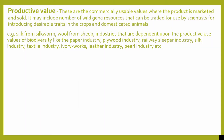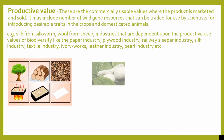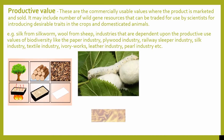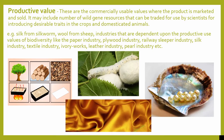Productive value — these are the commercially usable values where the product is marketed and sold. It may include a number of wild gene resources that can be traded for use by scientists for introducing desirable traits in crops and domesticated animals. For example, the paper industry, silk from silkworm, and the pearl industry.